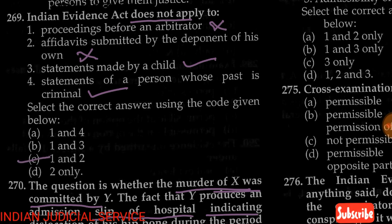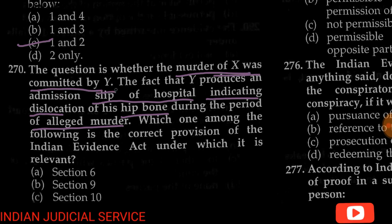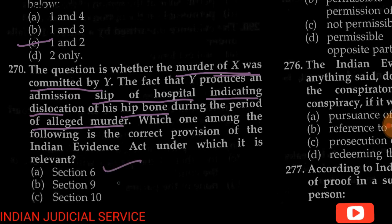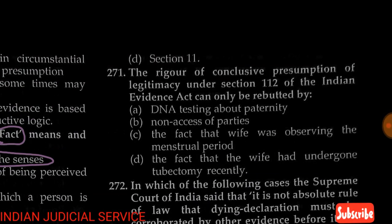Question number 270: Whether the murder of X was committed by Y — the fact that Y produced a hospital admission slip indicating dislocation of the hip bone during the period of the alleged murder. The correct provision of the Indian Evidence Act under which this is relevant is Section 11. Option D is correct.